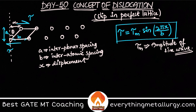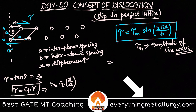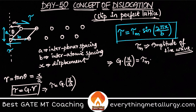The shear strain gamma can be taken as tan(theta), which equals x/a. We can also write shear stress as tau = G × (x/a), analogous to Hooke's law, where G is the shear modulus. Since we are dealing with very small atomic spacings, theta is very low, so we approximate sin(2πx/b) ≈ 2πx/b.